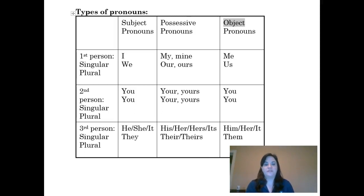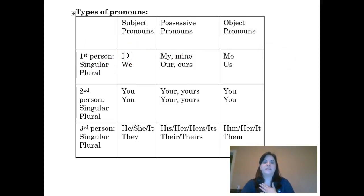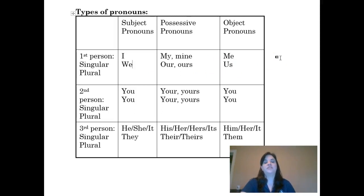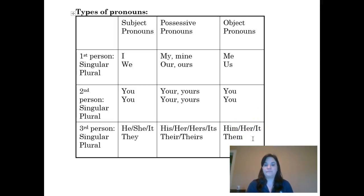The rest of this chart shows the difference between singular and plural pronouns based on whether they are subject, possessive, or object pronouns, and based on the perspective — first, second, or third person. For example, in first person singular, the subject pronoun would be 'I,' or 'we' if speaking plurally. For second person possessive, you would use 'your' or 'yours.' For third person object pronouns, the singular forms are 'him,' 'her,' or 'it,' and the plural is 'them.'